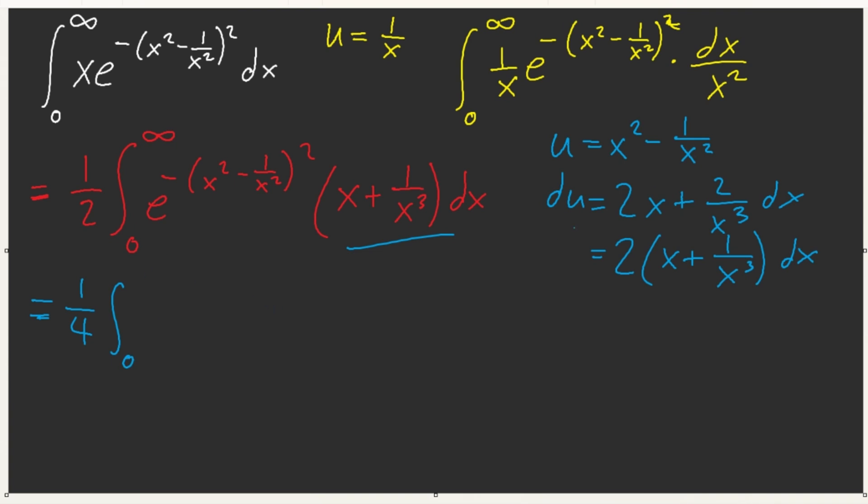This is equal to 1 fourth from, oh well, if we plug in zero we get negative infinity. Plug in infinity, we get infinity. And now we have e to the power of negative u squared. What is this? Do you remember? This is the Gaussian integral. And so our answer is square root of pi over 4.